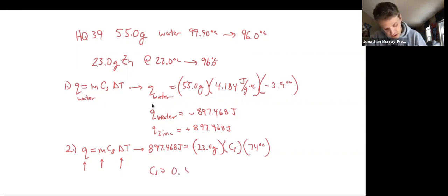Because I've done this question already two or three times this week. So when I divide those across, I get 0.527 joules per gram times degree Celsius.